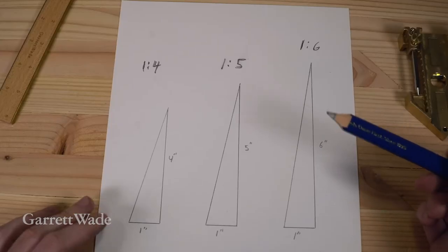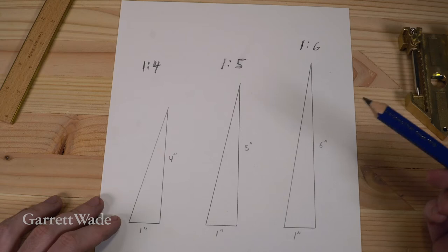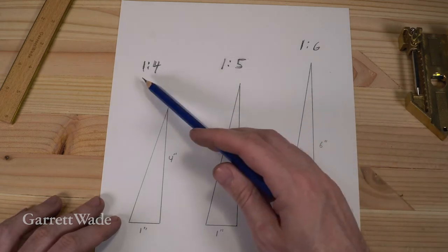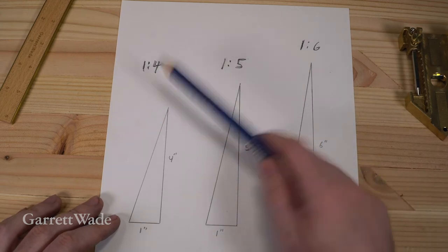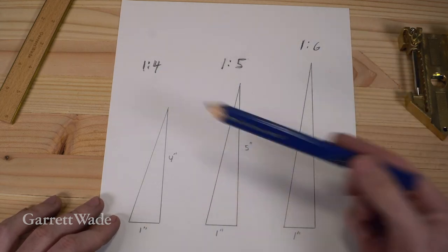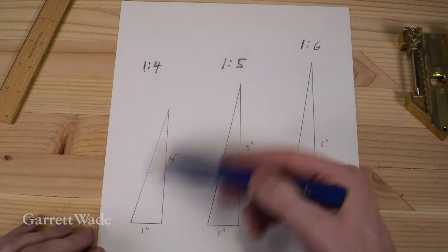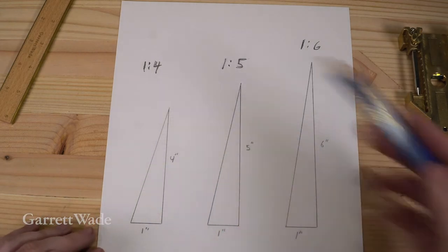So the way I understand it is that dovetail angles are typically measured in a ratio. You got one to four, one to five, one to six. Those are some examples. And those ratios actually represent a triangle, a right triangle of which the hypotenuse is your angle.